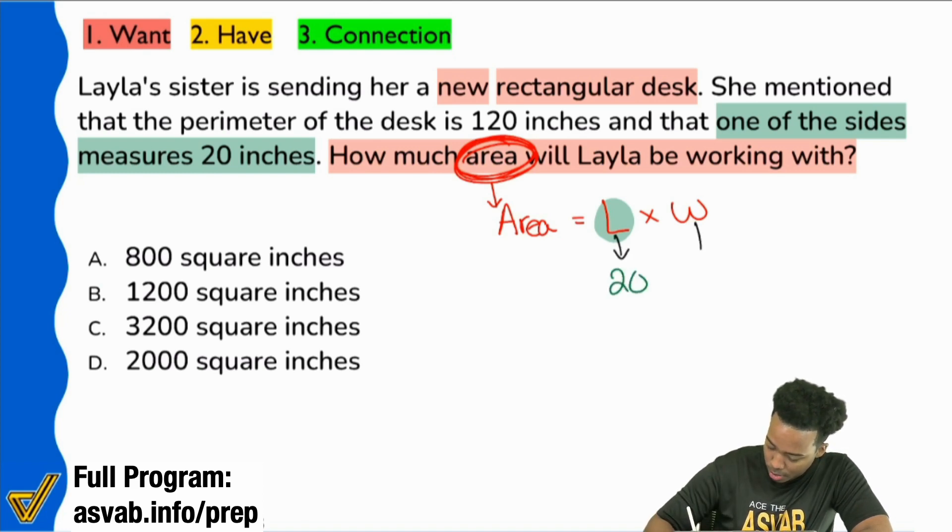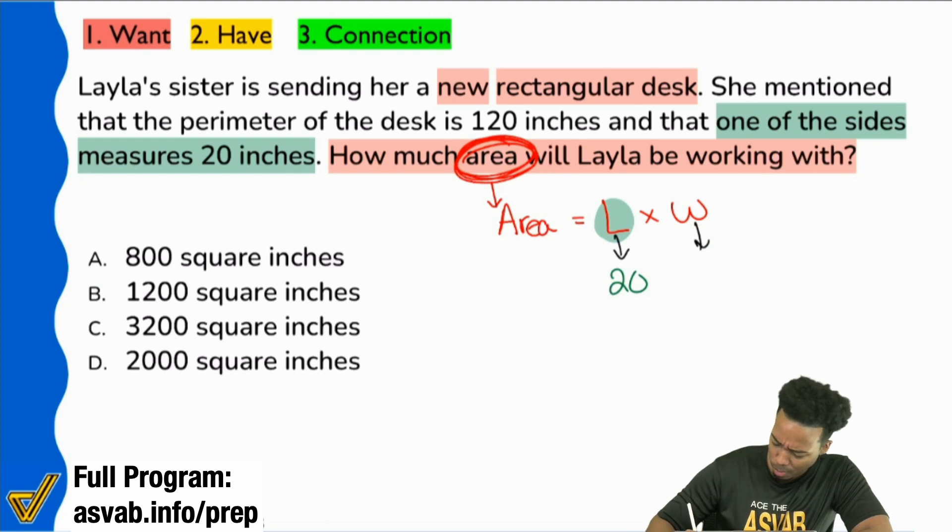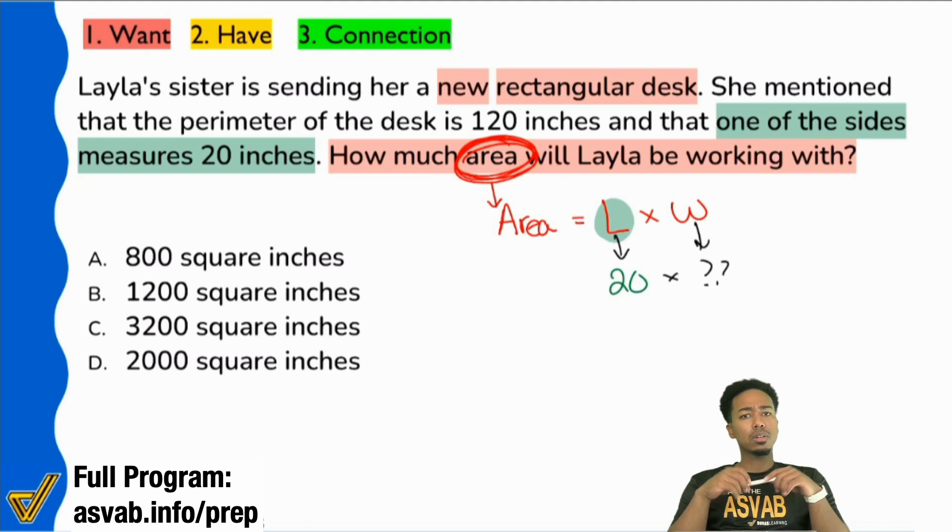And the one thing that I'm confused on is, well, I just read the whole question, the whole problem. I don't see the width. I don't see the width. I don't see it. So everybody, the goal here at this point in time, we're looking for the area. We have the length, but we don't have the width. Is it reasonable to say that we're going to have to do some detective work to figure out what the width is going to be?